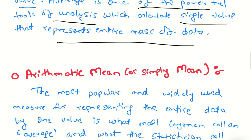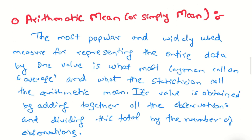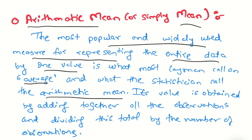Now we are talking about the main topic: Arithmetic mean or simply mean. The most popular and widely used measure for representing the entire data by one value is what most laymen call an average. And what the statistician calls arithmetic mean. Its value is obtained by adding together all the observations and dividing this total by the number of observations.